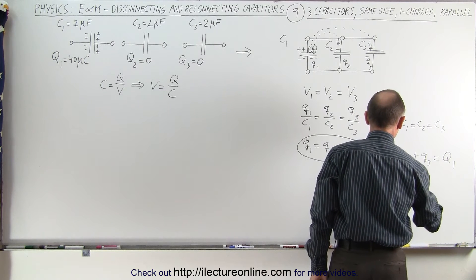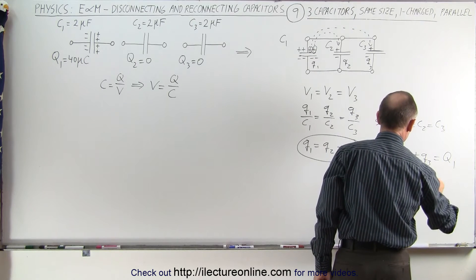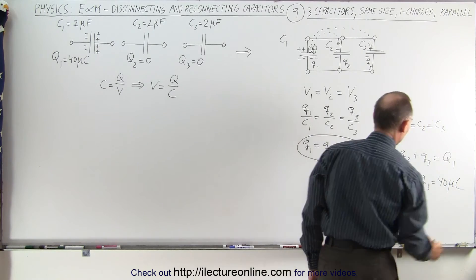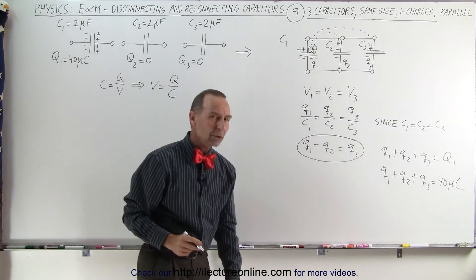So the final charges Q1 plus Q2 plus Q3 must equal 40 microcoulombs. Now we're getting closer.